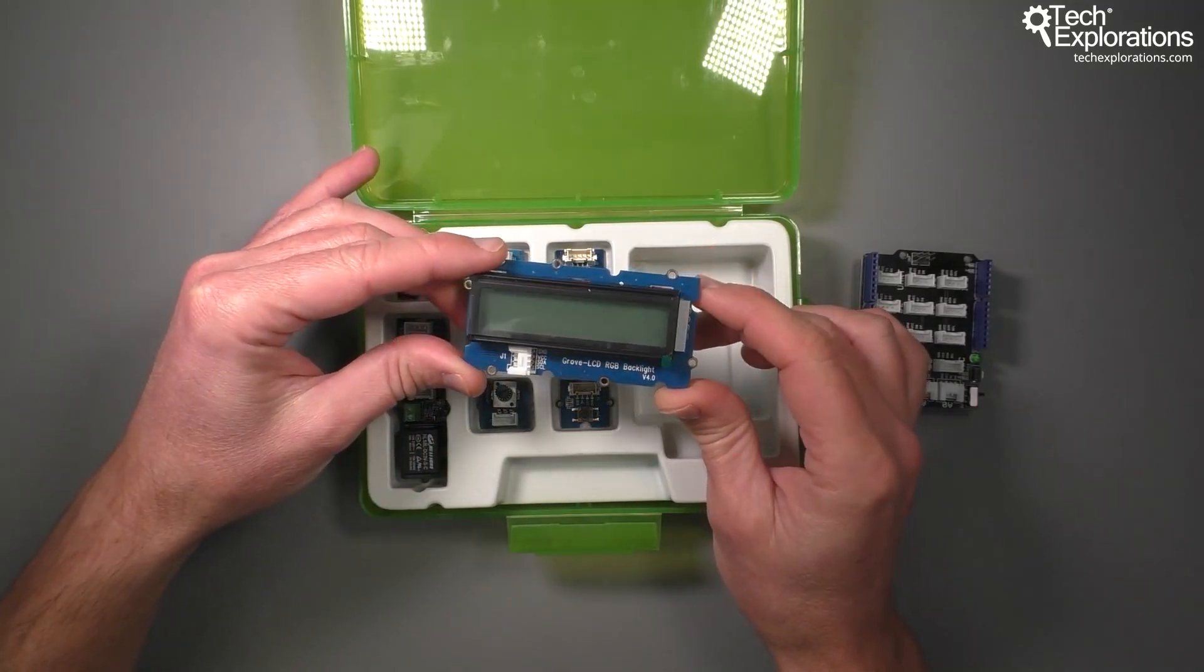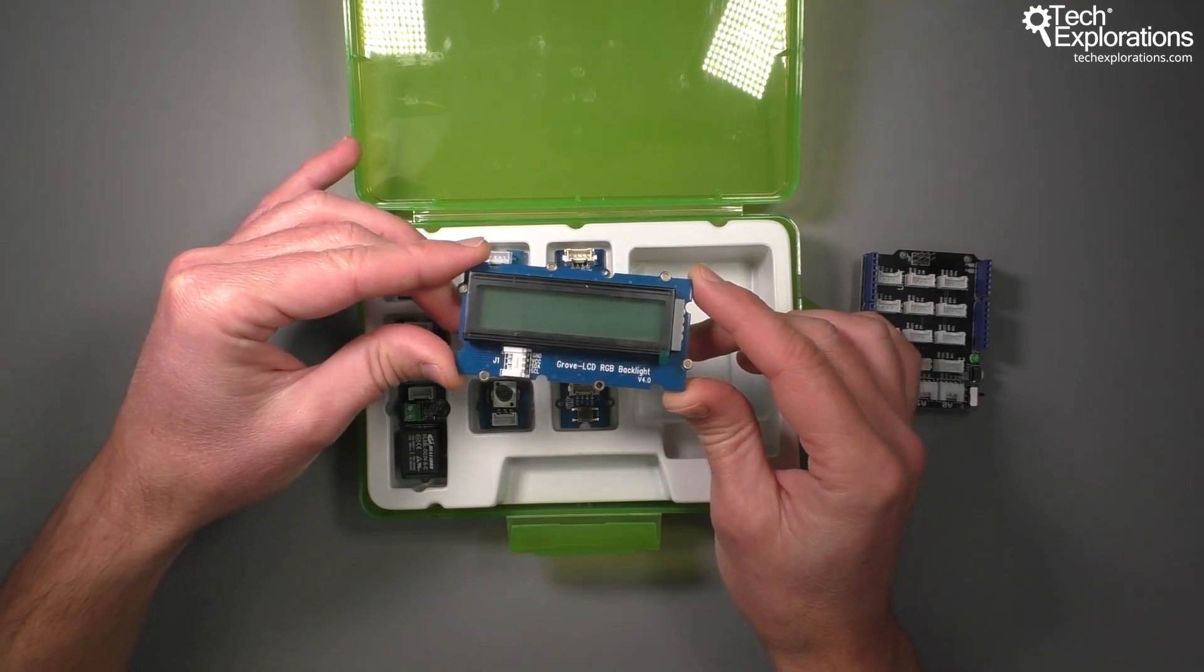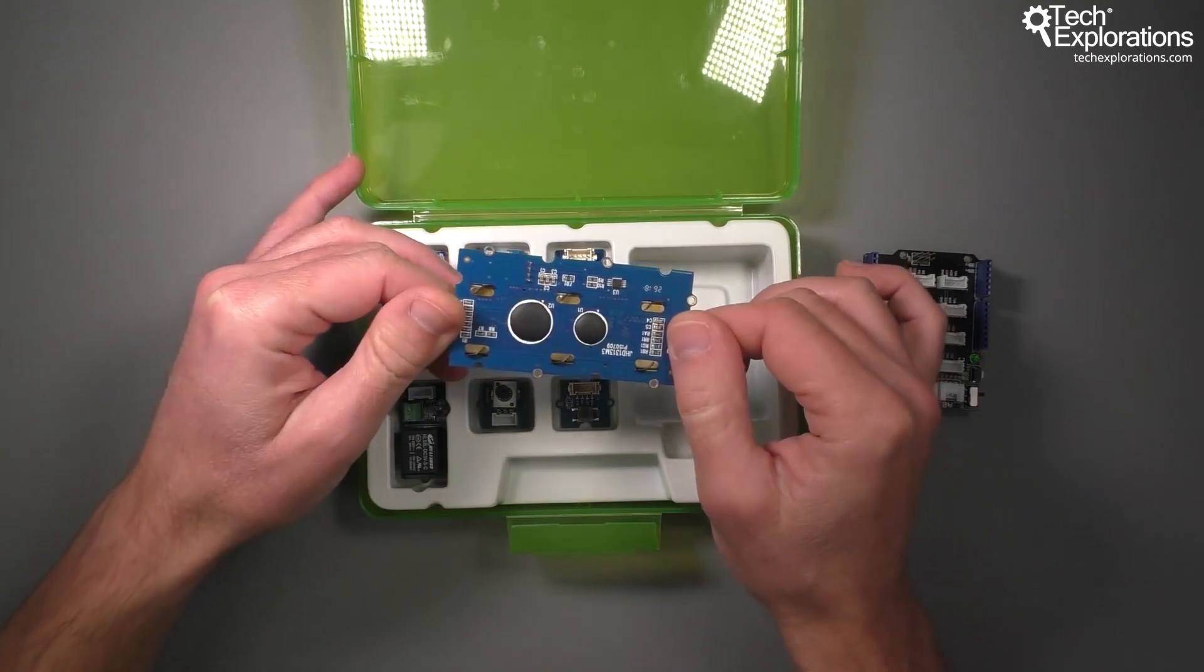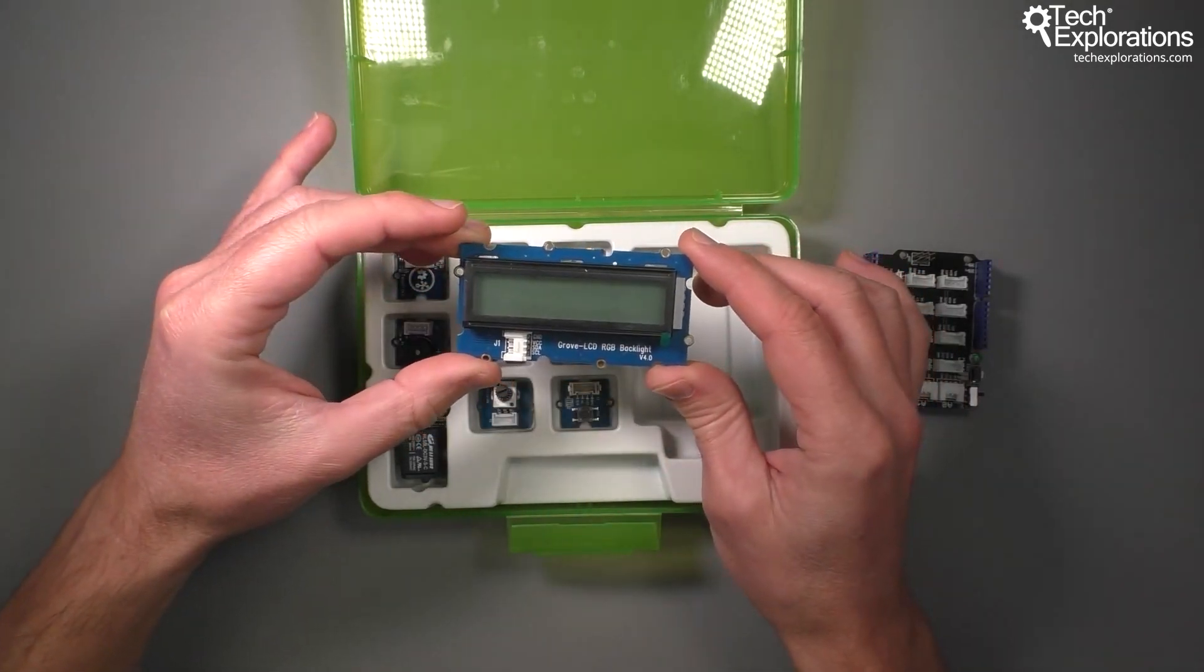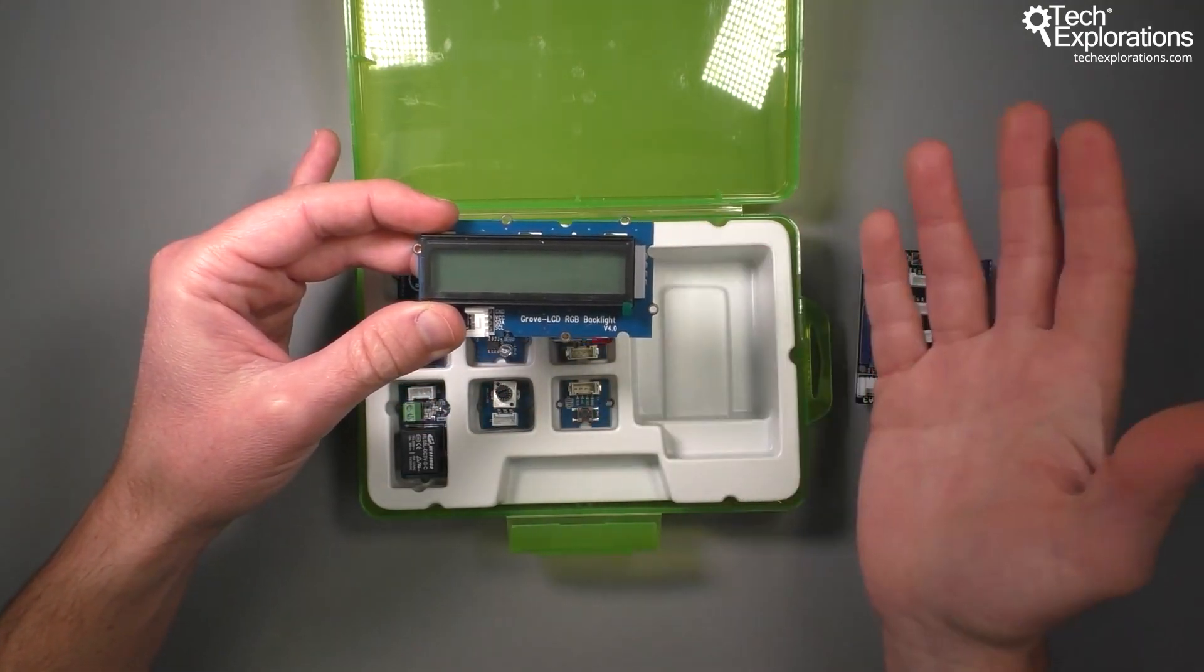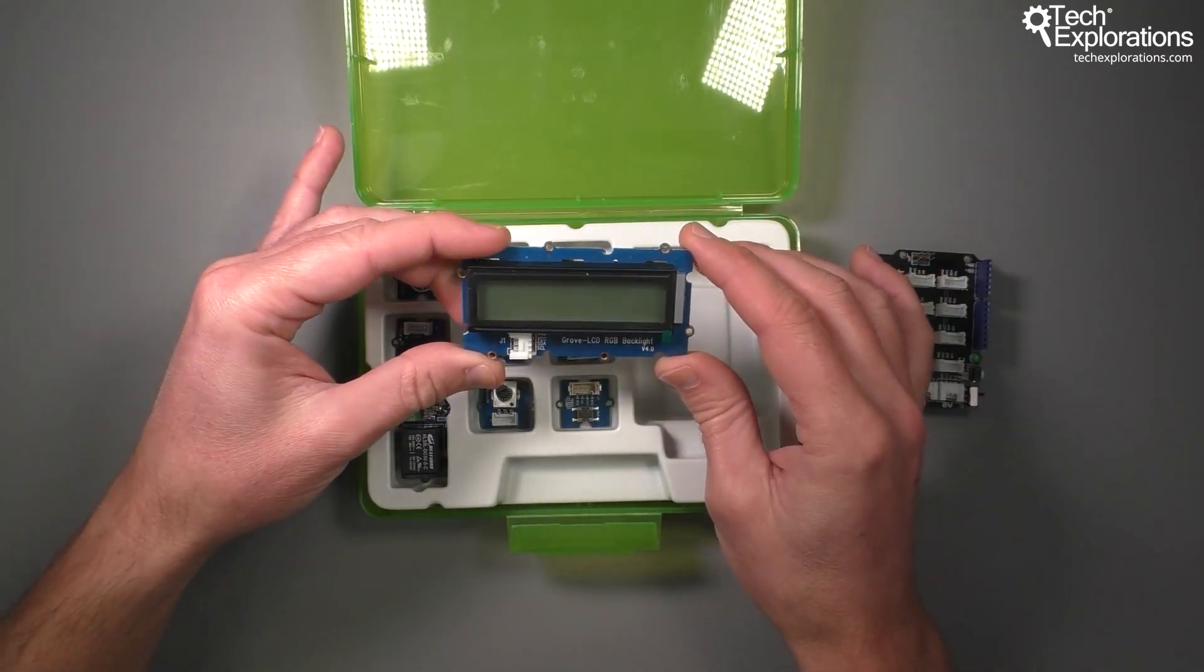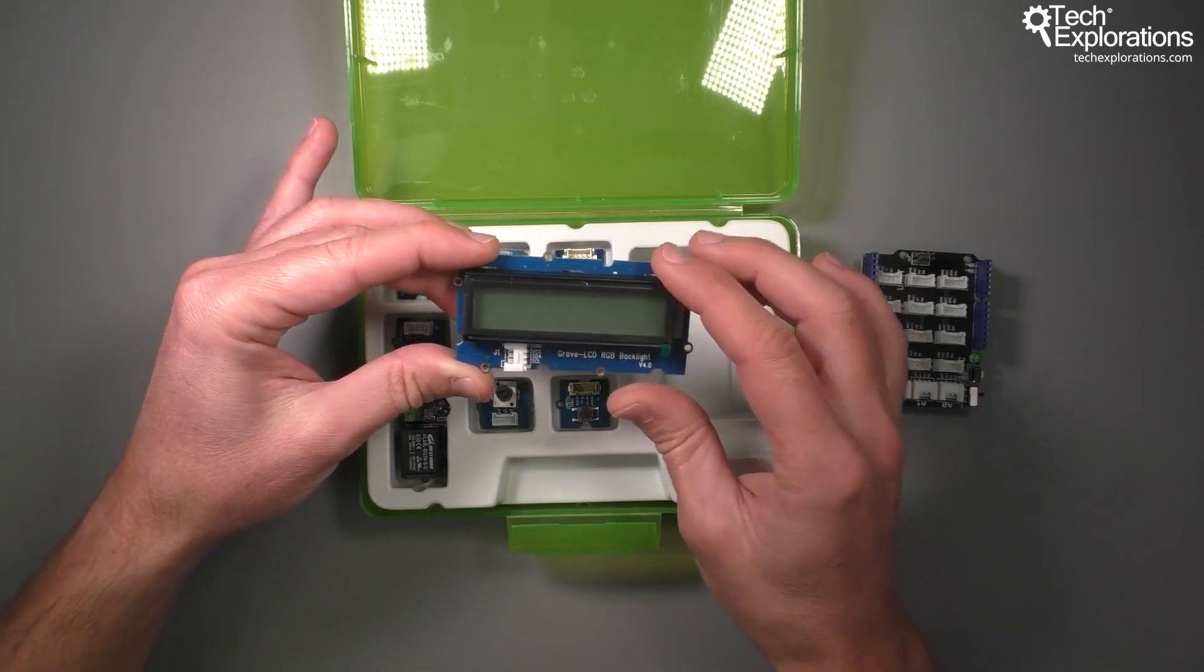Apart from the base shield, the kit comes with a 2 by 16 characters LCD RGB or red green blue backlit display like this one. We'll be using this display in our experiments to show graphical elements such as smileys and text and numbers of course.